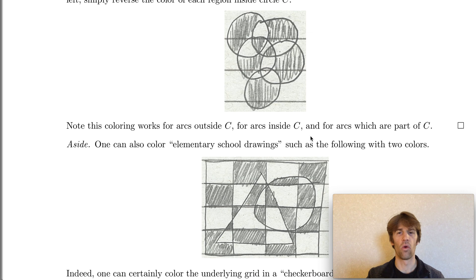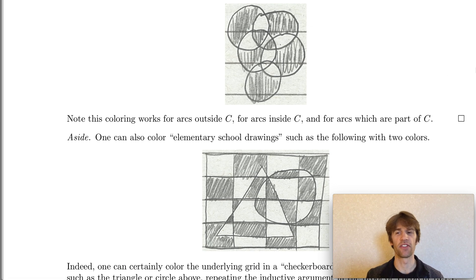And we want to verify that this new coloring preserves the property that adjacent regions are colored differently. So there's a couple cases of arcs that we need to check. First consider an arc that's outside the newly added circle C. Well the colorings on either side of this arc haven't switched, and so this arc has one color on each side.